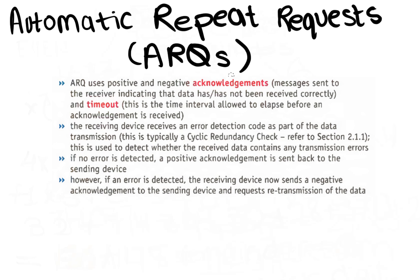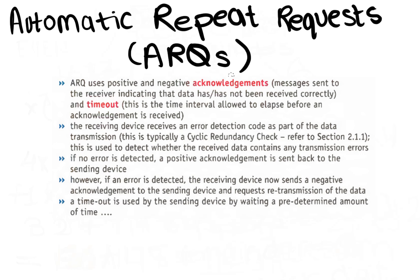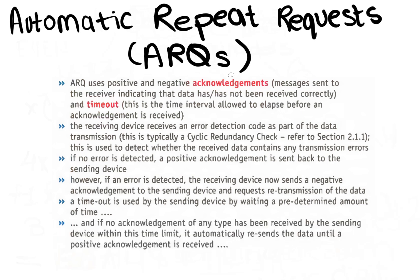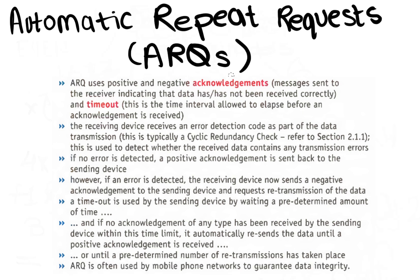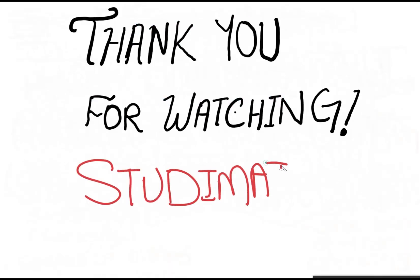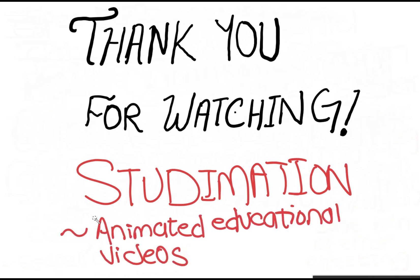If no error is detected, a positive acknowledgement is sent back to the sending device. If an error is detected, the receiving device sends a negative acknowledgement to the sending device and requests retransmission of the data. A timeout is used by the sending device: if no acknowledgement of any type has been received within the time limit, it automatically resends the data until a positive acknowledgement is received, or until a predetermined number of retransmissions has taken place. ARQ is often used by mobile phone networks to guarantee data integrity. Thank you for watching StudyMation Animated Educational Videos.